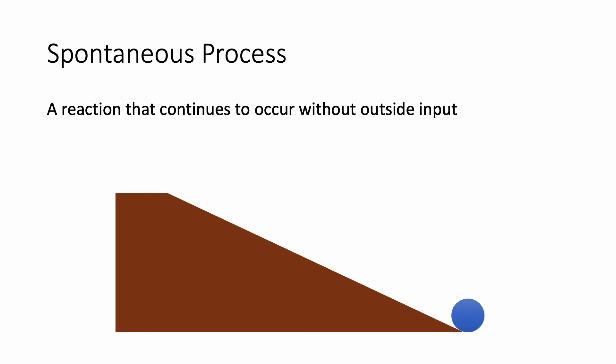By contrast, consider the reverse of this reaction, where you're trying to roll a ball uphill. If you just give it a little nudge with your foot, it'll go up, but then it will roll back down again. So that is a non-spontaneous process. There's usually a spontaneous process, and then the reverse process would be non-spontaneous. If you have a non-spontaneous process, the reverse process would be spontaneous.